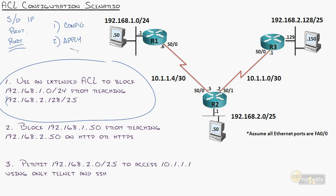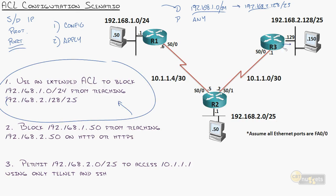With extended access lists, we can filter based on source and destination. So based on this question, we need to create a statement that says deny 192.168.1.0/24 from reaching 192.168.2.128/25. We can put that statement in there, and then say permit anything else. If I can say deny this source from reaching that destination, where can I apply it? Well, there's actually a lot of places. I could apply it outbound right here.